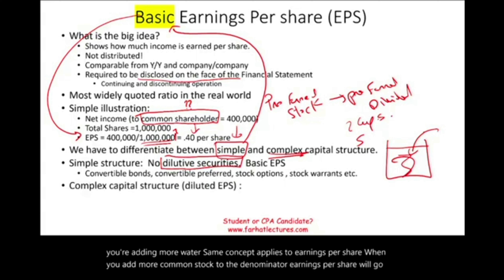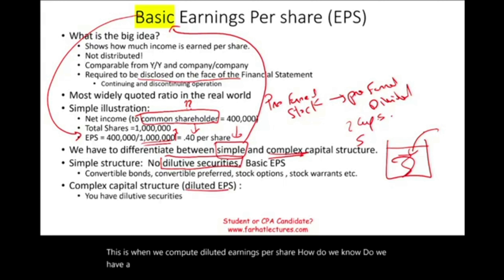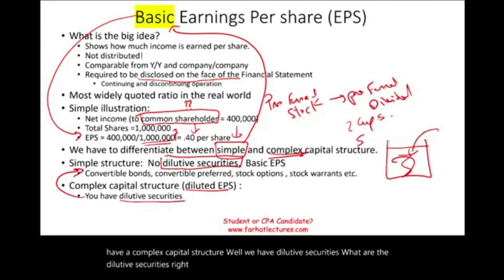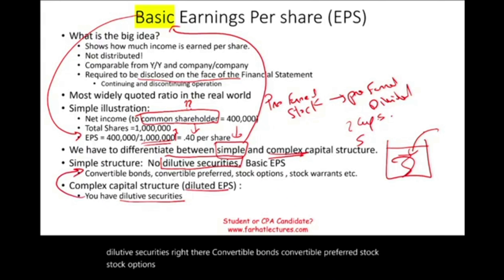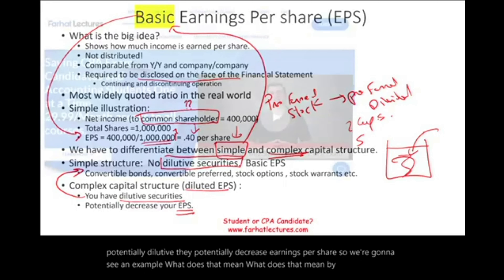Now, with a complex capital structure, this is when we compute diluted earnings per share. How do we know we have a complex capital structure? We have dilutive securities: convertible bonds, convertible preferred stock, stock options, stock warrants, and so on. Those are potentially, potentially dilutive — they potentially decrease earnings per share. We're going to see in an example what it means to be potentially diluted.